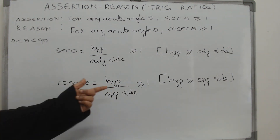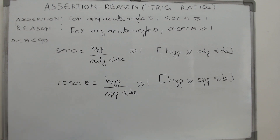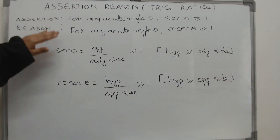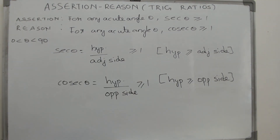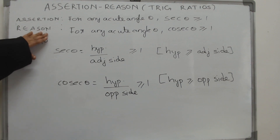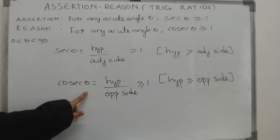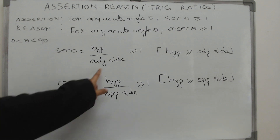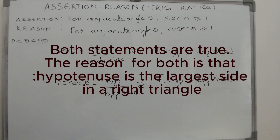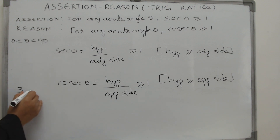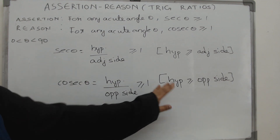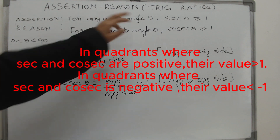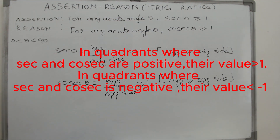The hypotenuse is always the greatest side in a right-angle triangle because it lies opposite the greatest angle, which is 90 degrees. So the assertion is true, but the key reason is that the hypotenuse is the largest side. Similarly, cosecant theta is hypotenuse divided by opposite side — again an improper fraction — so cosecant theta is also always greater than one, for the same reason.